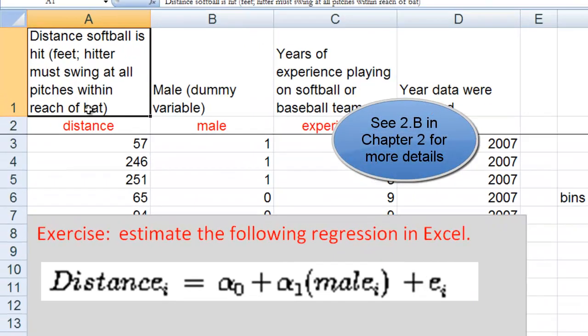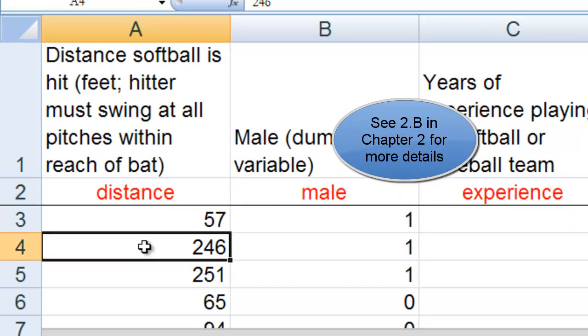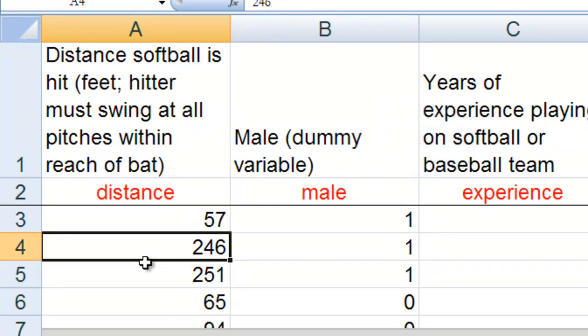If you see in column A, we have data on distance. My students stepped up to the plate, and some of them only hit a softball 57 feet, some hit them 246 feet.